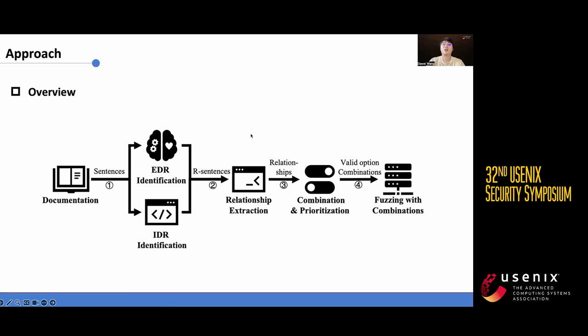Copy the Fuzz first extracts sentences related to the options and identifies both explicit and implicit relationship declarations. For statements identified as containing relationship declarations, Copy the Fuzz proceeds to extract specific details about the relationships and based on this information, it arranges and combines options accordingly. Finally, it subjects these option combinations to fuzz testing.